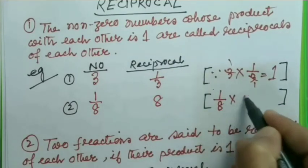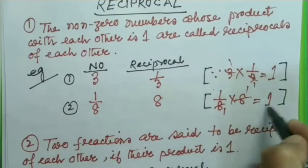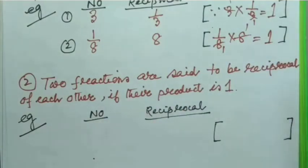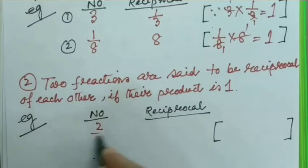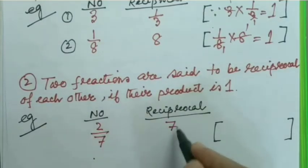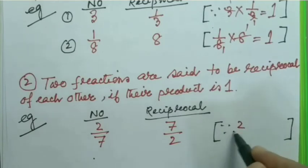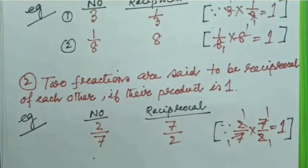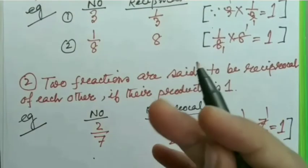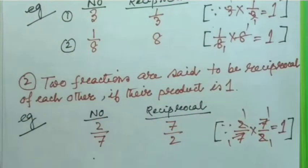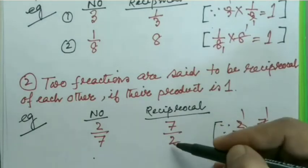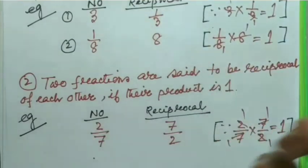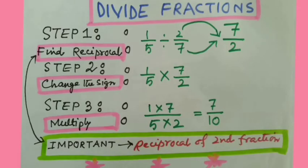Because 1/8 × 8 equals 1. Again, two fractions are said to be reciprocal of each other if their product is 1. For example, if I take 2/7, the reciprocal will be 7/2, since 2/7 × 7/2 equals 1. So ultimately, what have we found? To get the reciprocal of a fraction, we just change the position of numerator to denominator and denominator to numerator. Whenever we have to divide by a fraction, we just multiply by the reciprocal of that fraction.